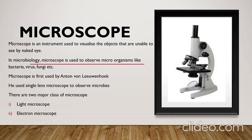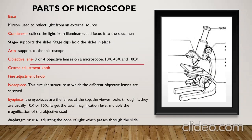There are two major classes of microscope: light microscope and electron microscope. The parts of microscope include base, mirror, condenser, stage, arm, objective lens, coarse adjustment knob, fine adjustment knob, nosepiece, eyepiece, and diaphragm or iris. Objective lens, eyepiece, and condenser are the three lenses used in a microscope.